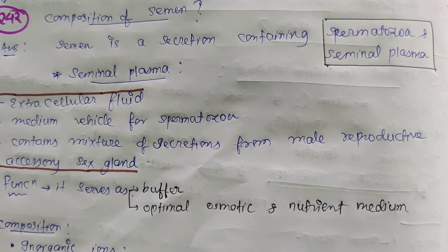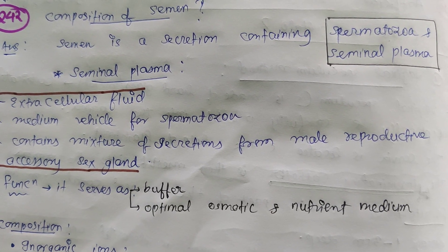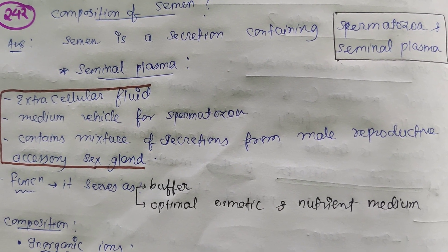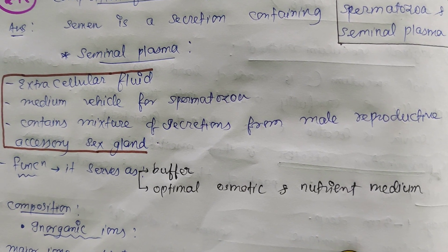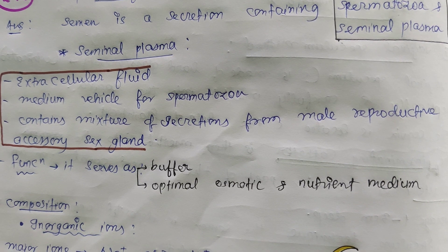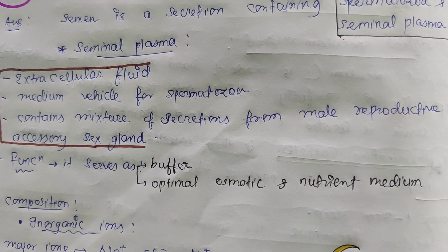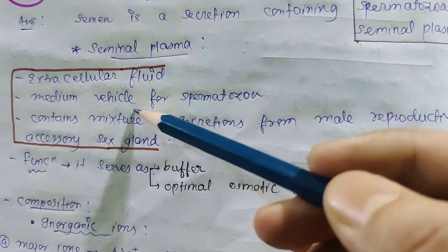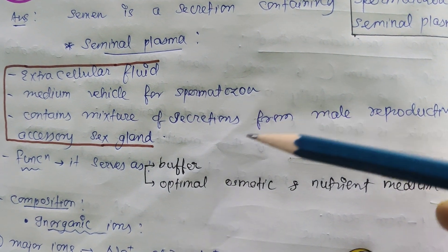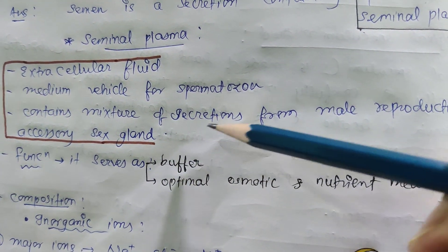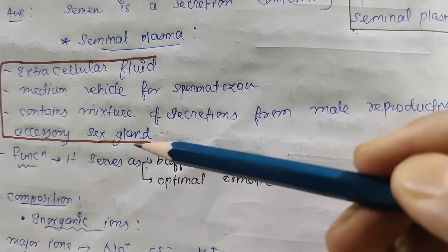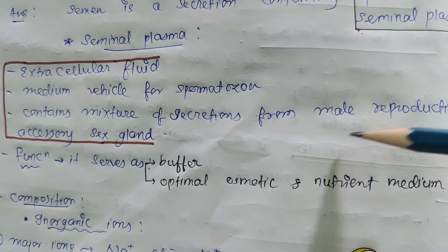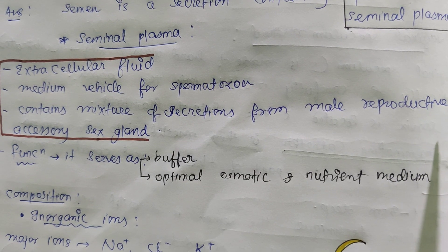The composition of semen equals spermatozoa plus seminal plasma. Seminal plasma has a long definition, broken down into key points: it is an extracellular fluid, it is a medium and vehicle for spermatozoa, and it contains a mixture of secretions from male reproductive accessory sex glands.